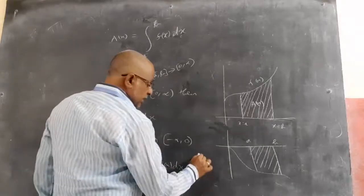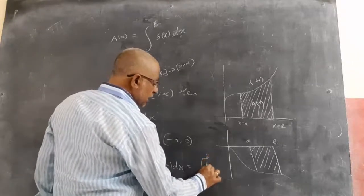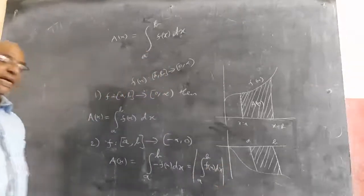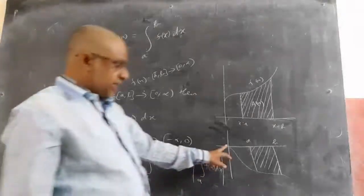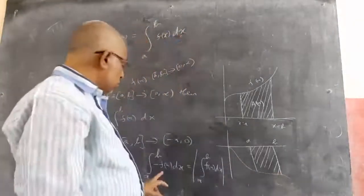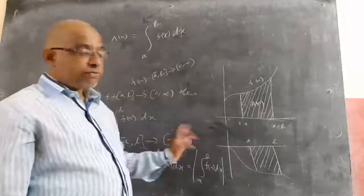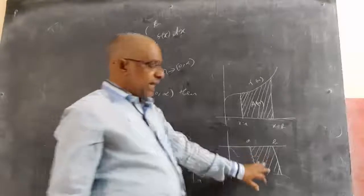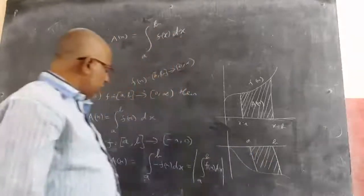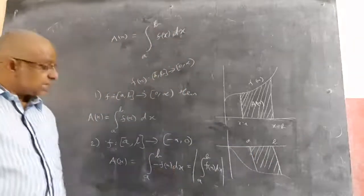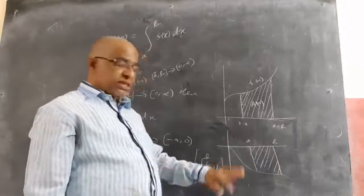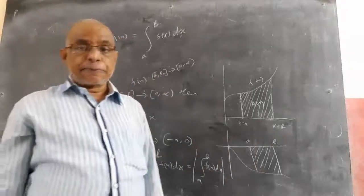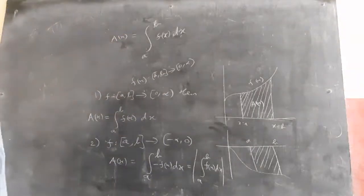Or we can write: integral of a to b f(x) dx — what I want to say is area cannot be negative. Here the function is negative, so you will get area in terms of a negative value. So if I keep minus — minus of minus — it automatically becomes plus. So we will find the integral of a to b minus f(x) dx, or we can take the absolute value: modulus of integral of a to b f(x) dx.